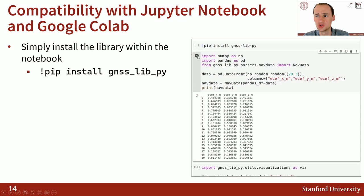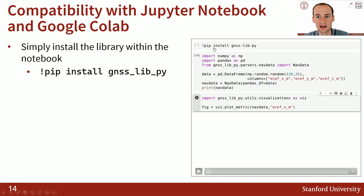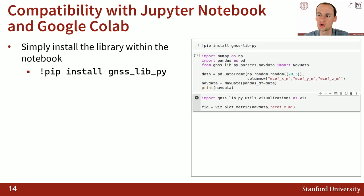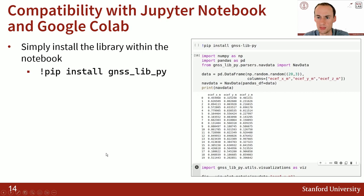We're compatible with Jupyter Notebook and Google Colab. I'm showing a quick video snippet of how to install — you simply add the exclamation point pip install gnss-lib-py command into Google Colab, and then inside of Google Colab you can use our Python library. In this example, I added a bunch of random numbers and then plotted it to show that this is working in Google Colab.